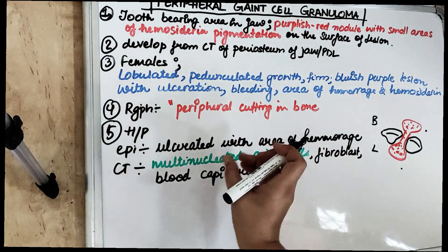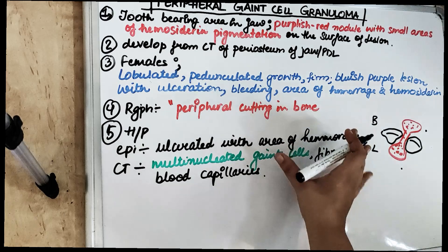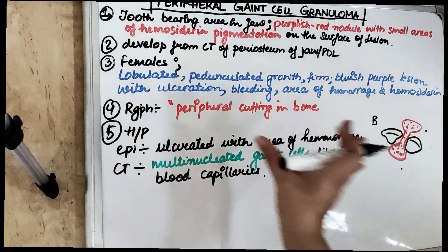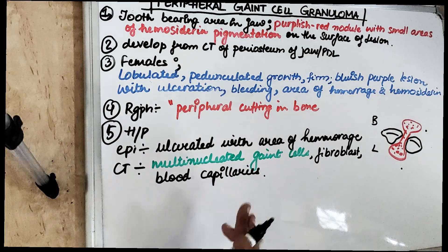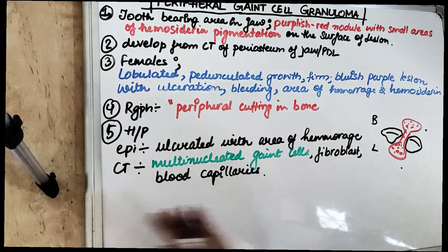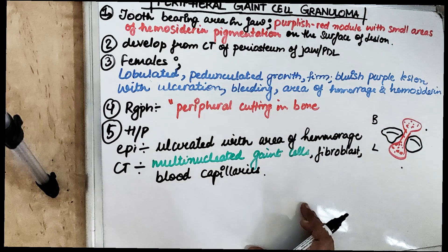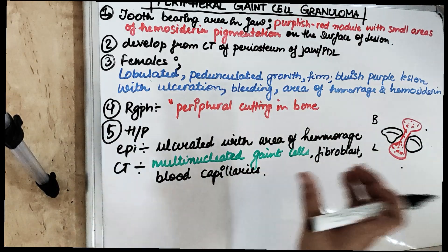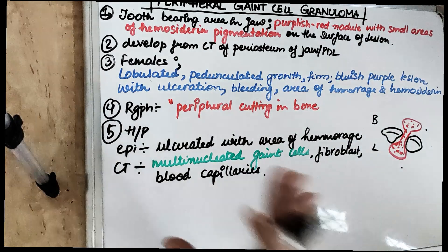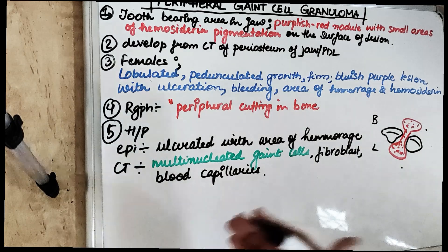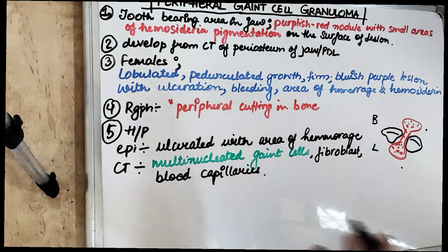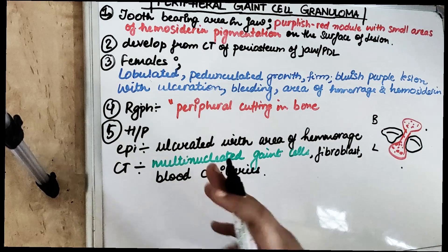On the radiograph, we see peripheral cuffing present in the bone, which is due to erosion of the underlying bone — the underlying bone becomes eroded. Histologically, the epithelium is ulcerated with some areas of hemorrhage, and the connective tissue contains giant cells as the name suggests — multinucleated giant cells, fibroblasts, as well as blood capillaries. This lesion develops from the connective tissue of the periosteum of the jaw or the PDL, and it is majorly due to traumatic injuries, resulting in granulomatous tissue formation and swelling.